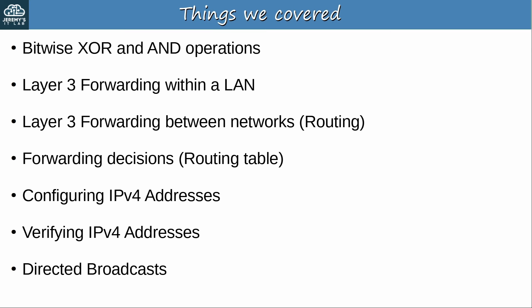Here's what we covered in this video. We started with bitwise XOR and AND operations, looked at layer 3 forwarding in a LAN as well as between networks, including how routers make forwarding decisions using the most specific match. Then we covered how to configure and verify IPv4 addresses, including secondary addresses. And finally we looked at layer 3 directed broadcasts. Although the layer 3 forwarding process itself is not new if you studied for the CCNA, there was still lots of new information in this video that can help deepen your understanding. Now let's move on to the quiz.